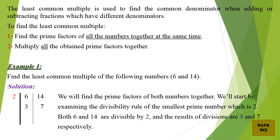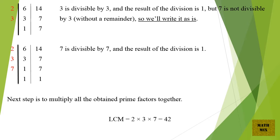Example 1: Find the least common multiple of 6 and 14. Solution: We will find the prime factors of both numbers together. Starting with the smallest prime number, 2 — both 6 and 14 are divisible by 2, giving results 3 and 7 respectively. 3 is divisible by 3 with result 1, but 7 is not divisible by 3 without remainder, so we write it as is. 7 is divisible by 7 with result 1. Multiplying all prime factors: LCM = 2 × 3 × 7 = 42.